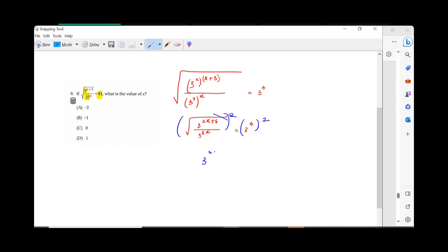So, 3 power 2x plus 6 divided by 3 power 3x equals 3 power 8. Got that?